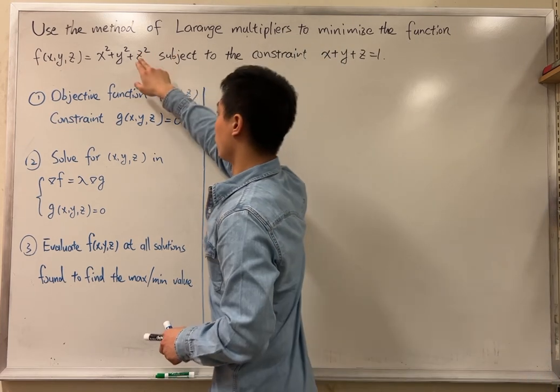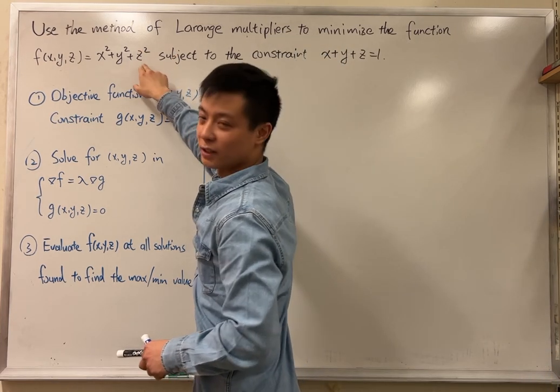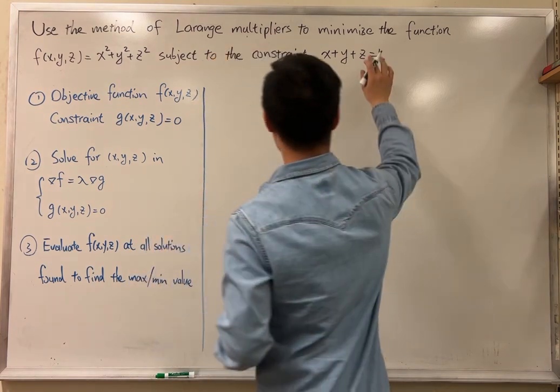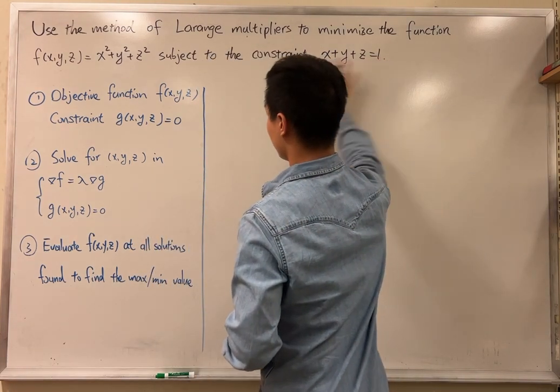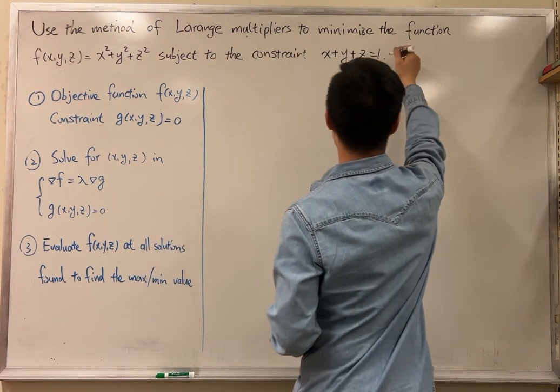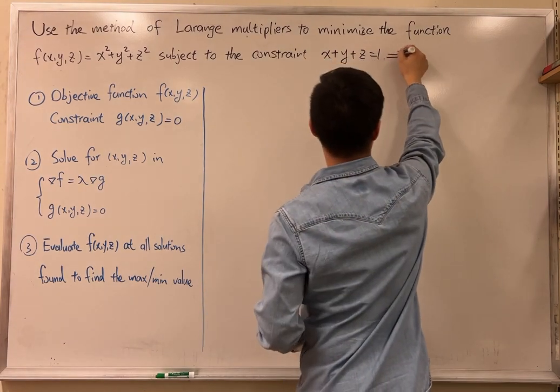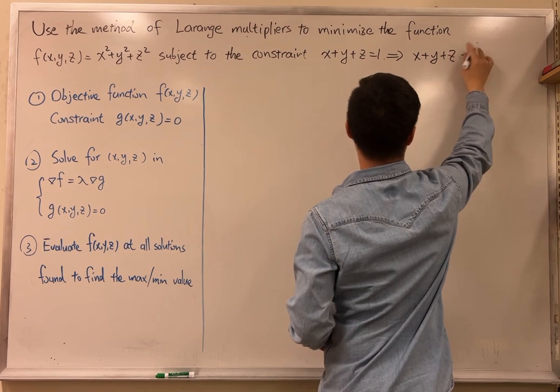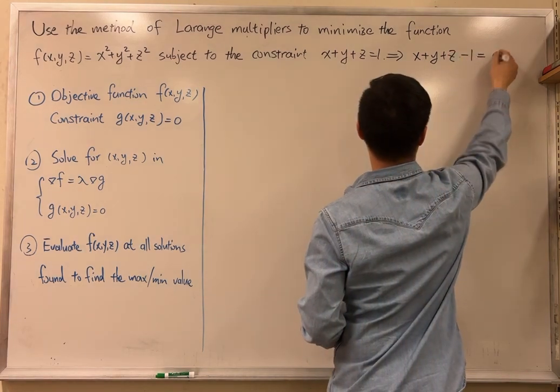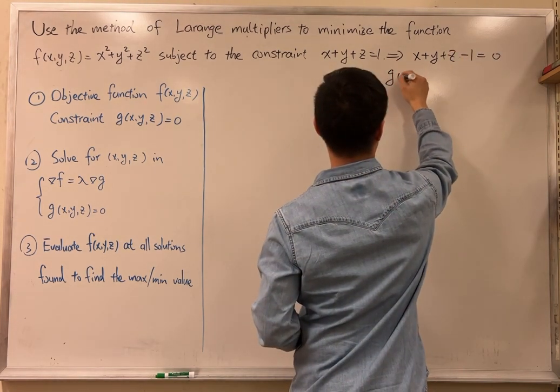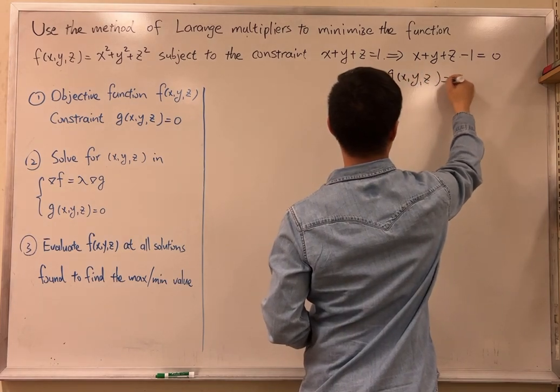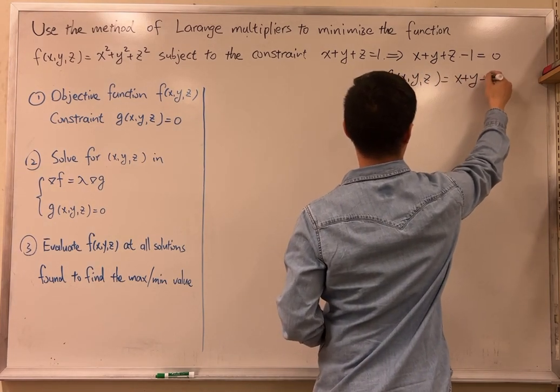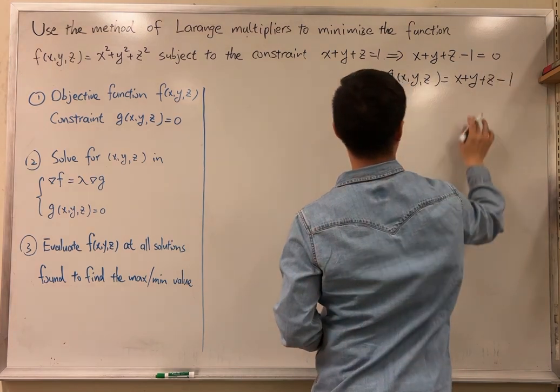The objective function is obviously already given in the question, and to have our constraint, we need to write this in this form, so we need to move everything to one side, to have x plus y plus z minus 1 equal to 0. So our g function is going to be x plus y plus z minus 1.